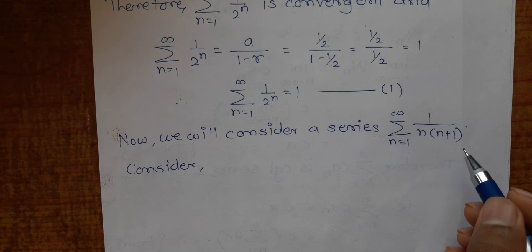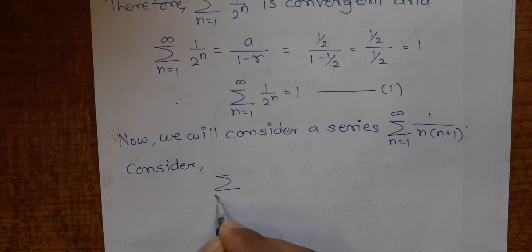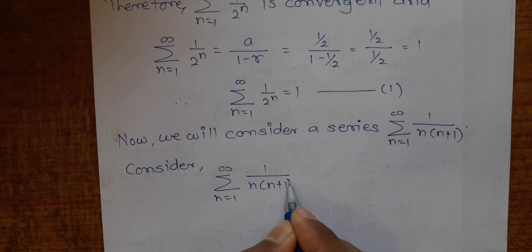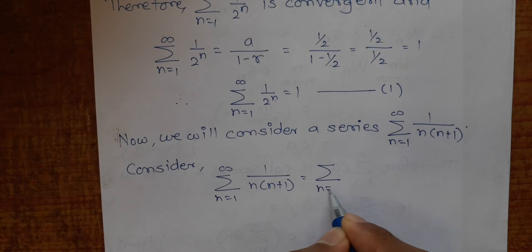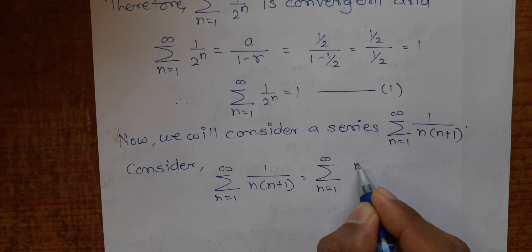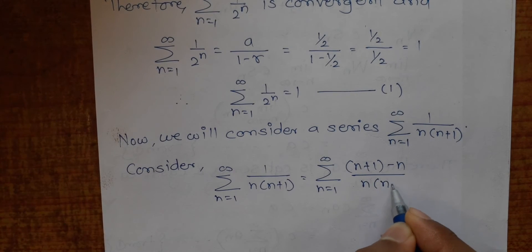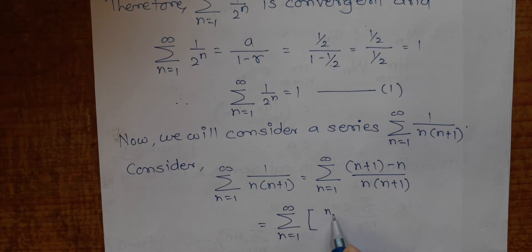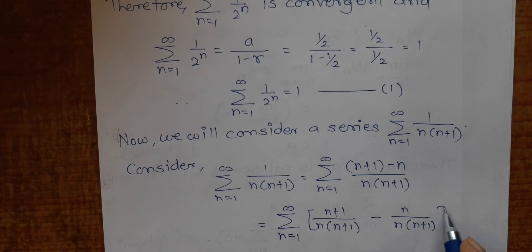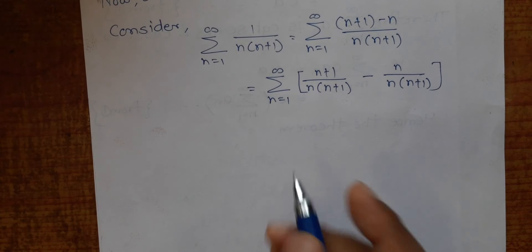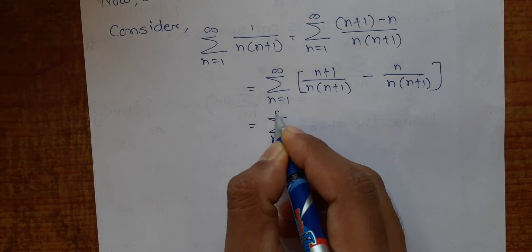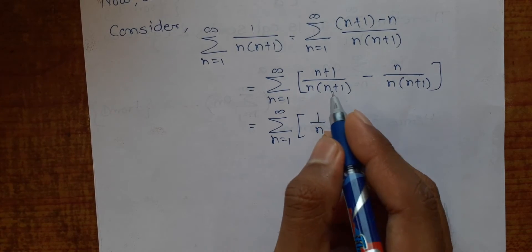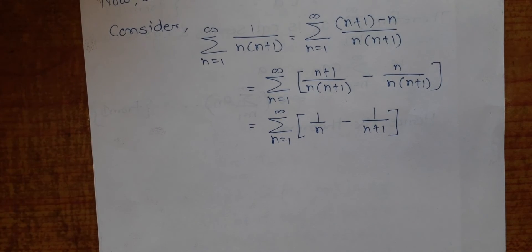Now we consider the series ∑ 1/(n(n+1)). We will find its convergence using the sequence of partial sums. But first, I will express it in a simpler way: 1/(n(n+1)) = (n+1 - n)/(n(n+1)), and dividing separately gives us 1/n - 1/(n+1). So the series becomes ∑(n=1 to ∞) (1/n - 1/(n+1)).